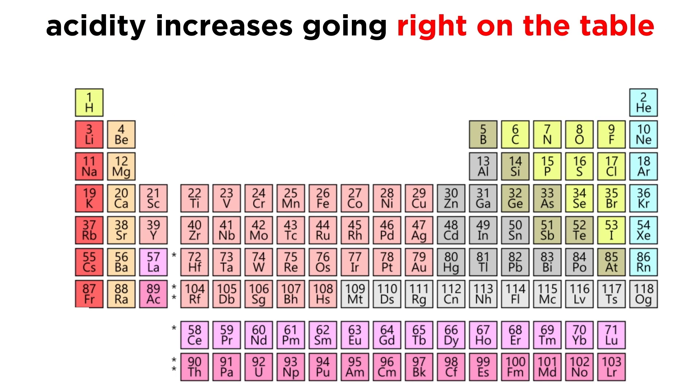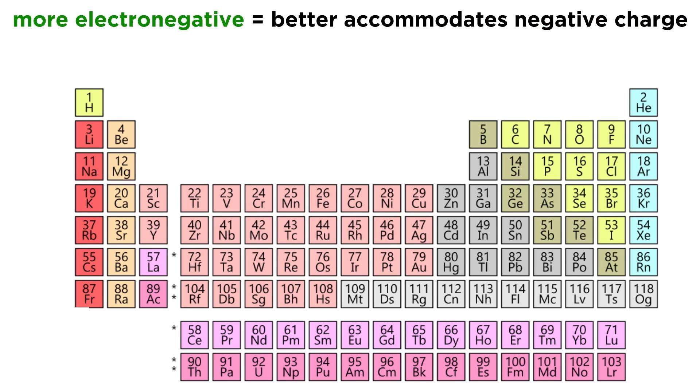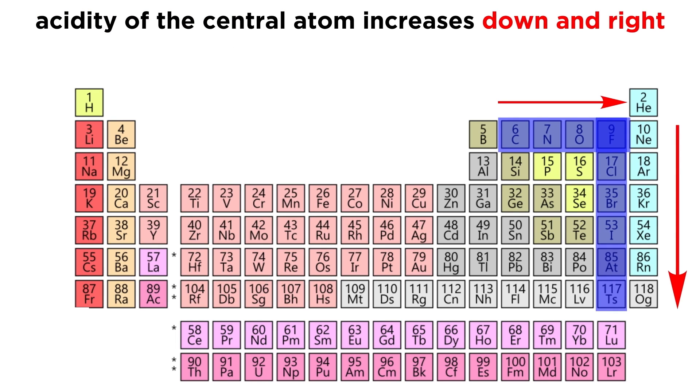We can also say that acid strength increases moving to the right. This has to do with electronegativity. The more electronegative the element, the better it can accommodate a negative charge. So if methane were to deprotonate, carbon would be very bad at accommodating the negative charge, whereas nitrogen is slightly better, oxygen is better still, and fluorine is quite good at accommodating this charge, so the acidity of a central atom increases going down and to the right on the periodic table.